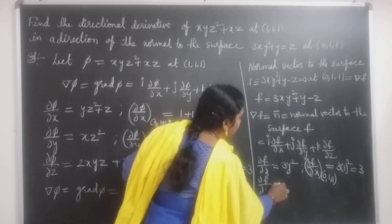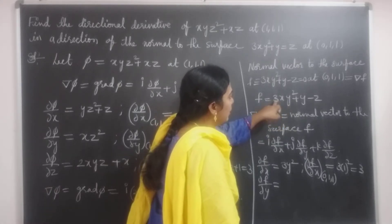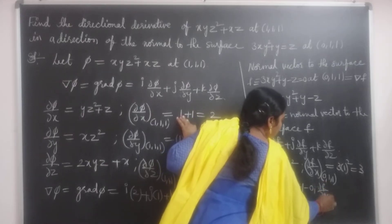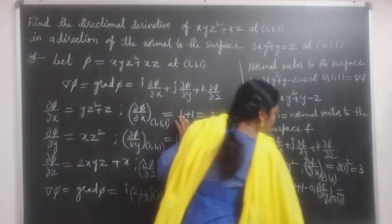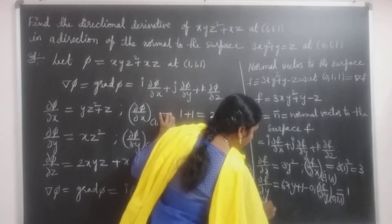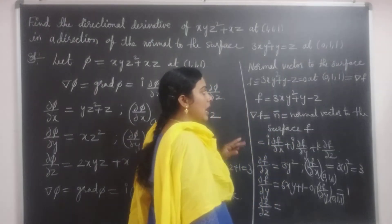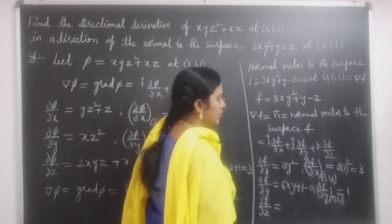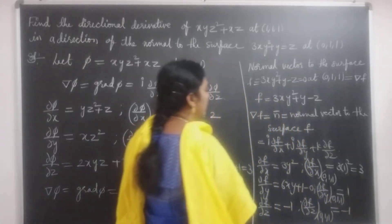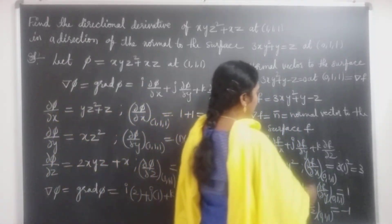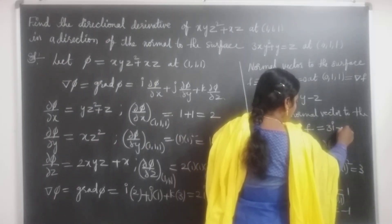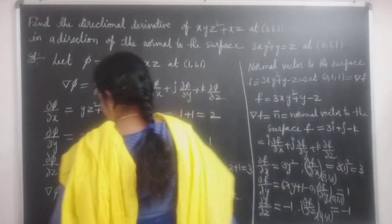For ∂f/∂y: the derivative of y² is 2y, giving 6xy, plus the derivative of y which is 1, minus 0. So ∂f/∂y = 6xy + 1. At the point (0, 1, 1): 6·0·1 + 1 = 1. For ∂f/∂z: the first two terms have no z, so their derivatives are 0, and the derivative of −z is −1. Thus ∂f/∂z = −1 at (0, 1, 1).